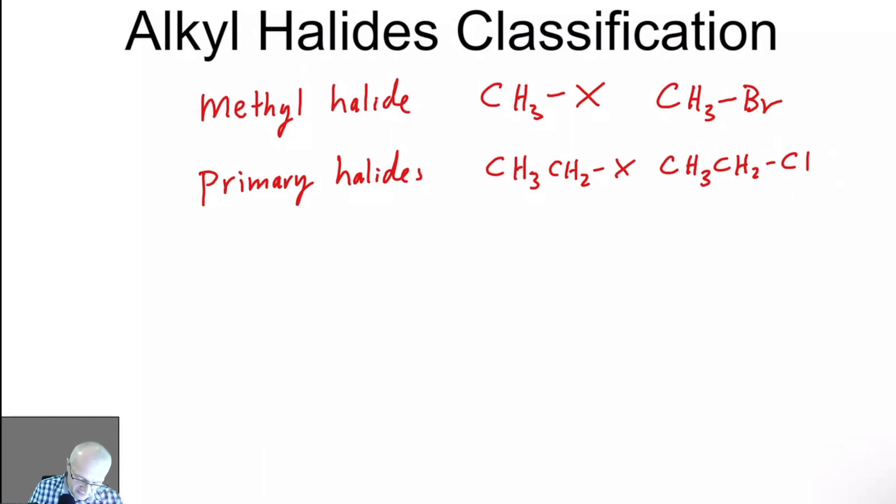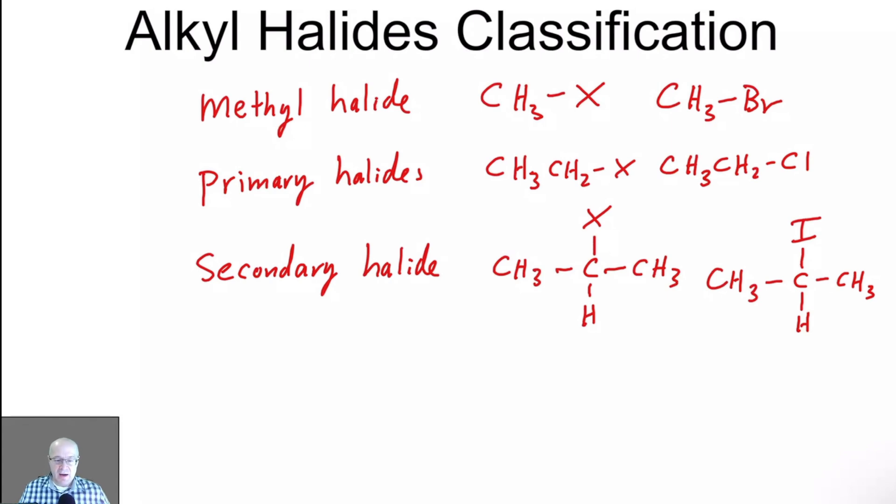Secondary halide. Where X, of course, again, is any halogen. Here's an example. Now, these are just simple examples of these things. There are, except for methyl, there are other examples. There is a secondary iodide.